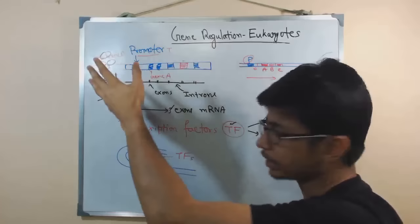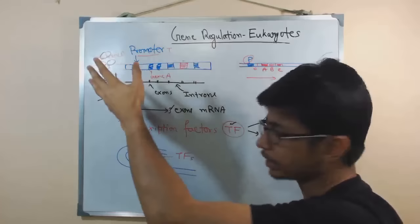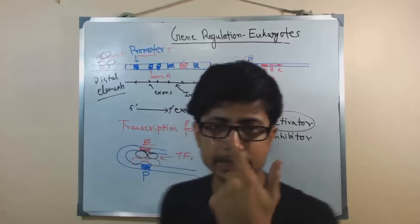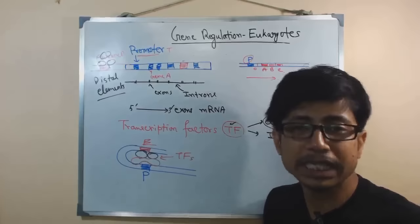Similarly, there are also inhibitory elements that can be present upstream or downstream — they can be in both directions. In that case, certain transcription factors act as inhibitors. If they are present and form an inhibitory complex, the synthesis of mRNA for that particular gene is not possible. That's how they regulate this process — this is one way of regulation at the genetic level.